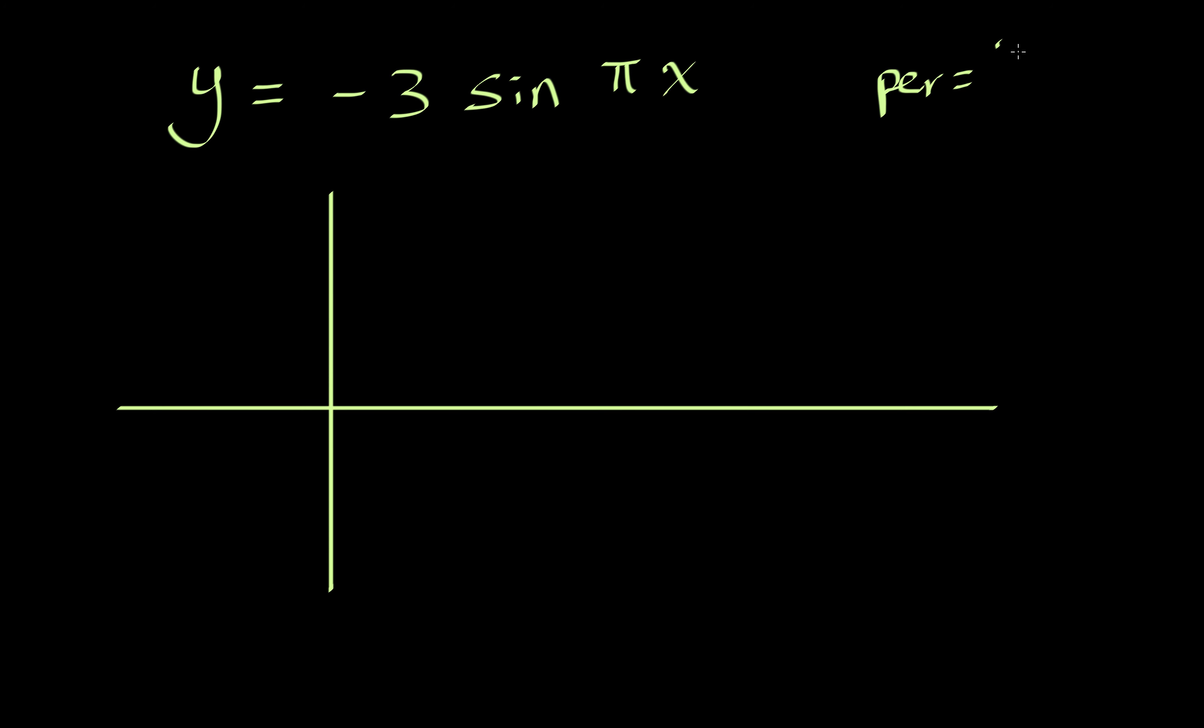Period is going to be 2π over our B term which is π. In this case it's okay to have just numbers, so period is 2. So instead of having 2π over here I'm just gonna write 2. Half that is 1, half that is one half. This is one over 2, two over 2, and then three over 2. Okay, and then instead of 1 we have to go up 3 maximum point, then down 3 for minimum point.